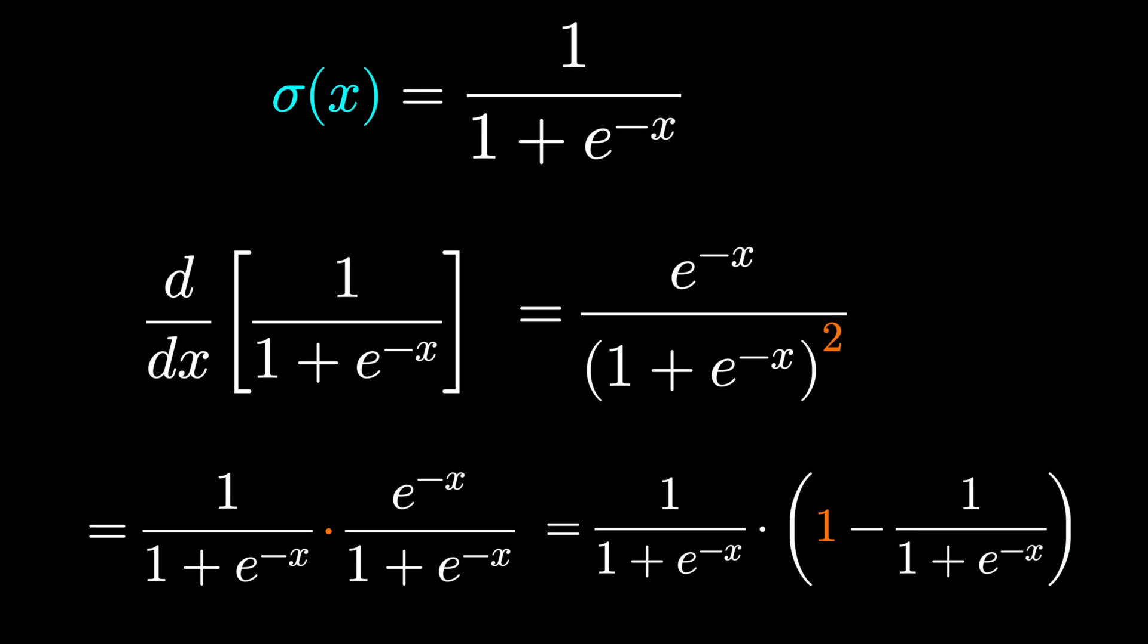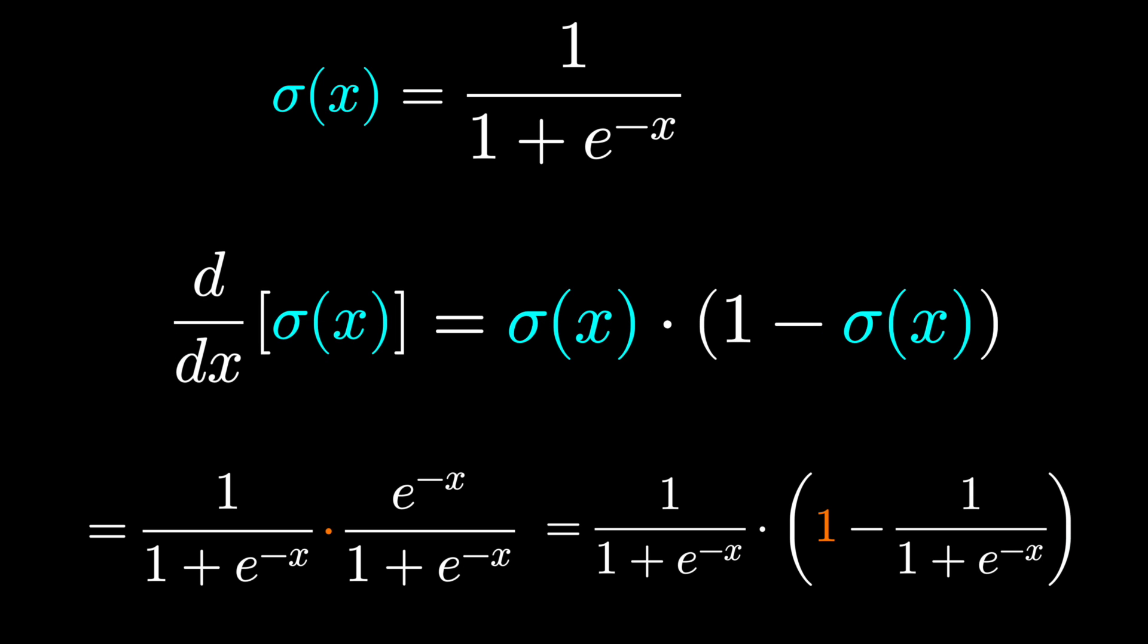Well, what was this quantity? It was the original sigmoid function. And so the derivative of this function is itself times 1 minus itself.